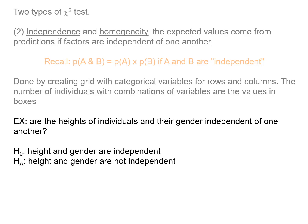As another example, are the heights of individuals and their gender independent of one another or not? So the null hypothesis would be that height and gender are independent. The alternative is they are not independent. And if you think about it, we kind of know the answer to this already, right? Obviously height and gender are not independent. But when we set up our statistical test, the null hypothesis is always going to be that they are independent, even if we don't expect that to be true.